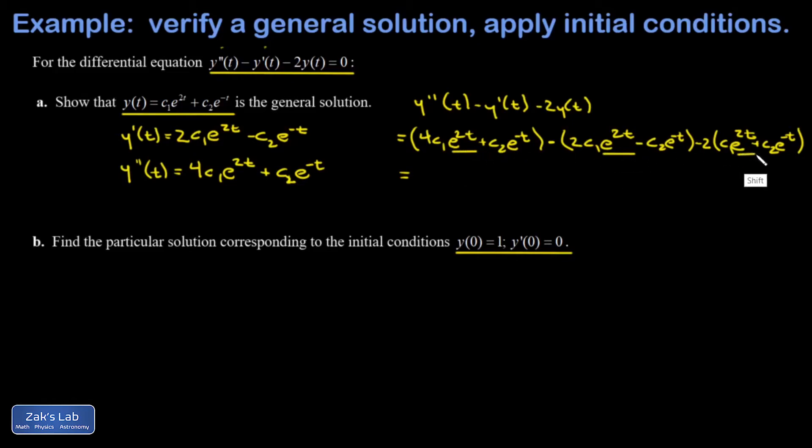And I immediately see that I have 4c₁e^(2t), but then I have a negative 2c₁e^(2t) and another negative 2c₁e^(2t), so I get a coefficient of zero for that term. I guess I'll show that as my intermediate step, and I do a similar type of bookkeeping for the e^(-t) terms.